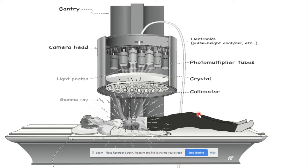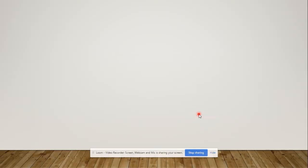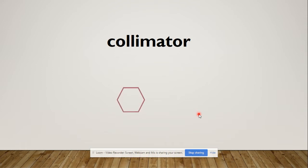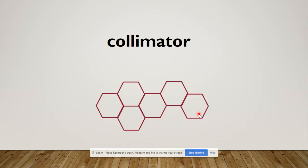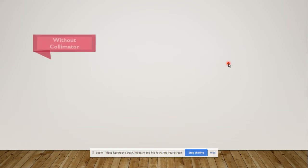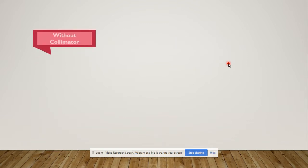The first component of the gamma camera is the collimator, which is the most significant component. As you can see, it consists of hexagonal-shaped tubes, all of them in a hexagonal shape.